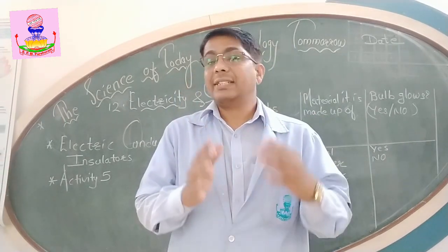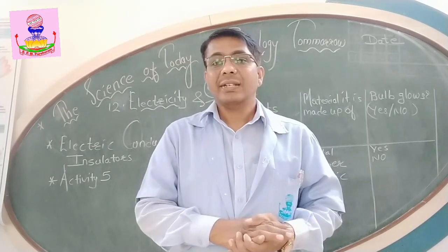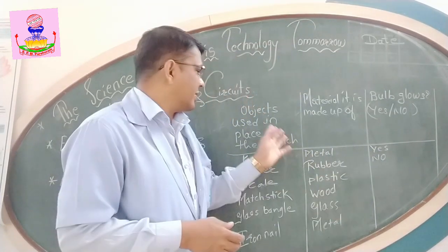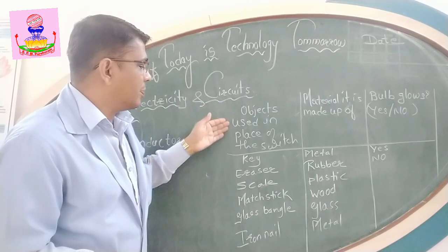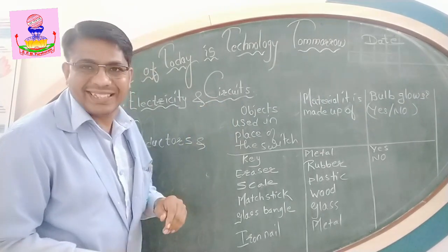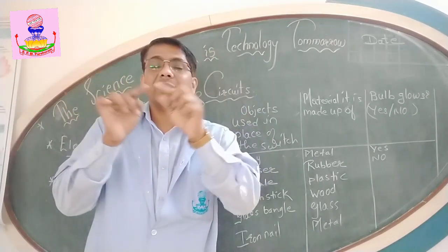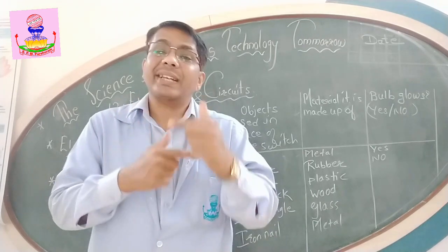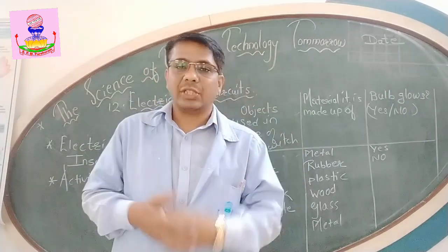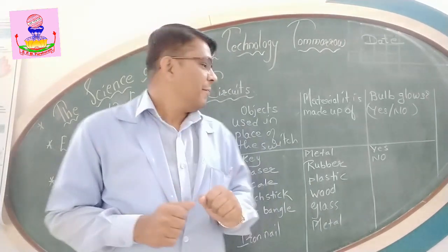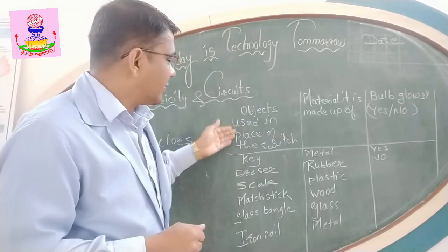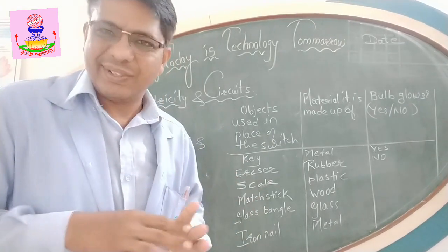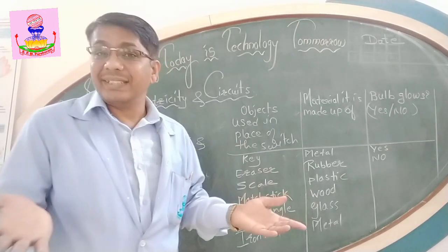Let us do Activity number five, where we are going to test certain substances. We will make a table with the object used in place of the switch. I am going to remove the switch, and in that place, instead of the switch, we are going to connect different types of objects and see whether the bulb glows. These are the objects given in the text, but you can use any objects you like and test them.